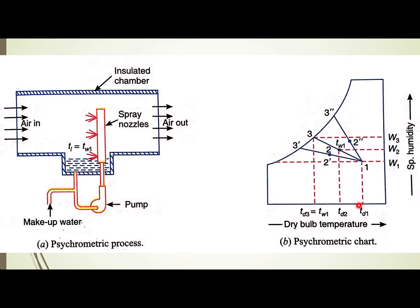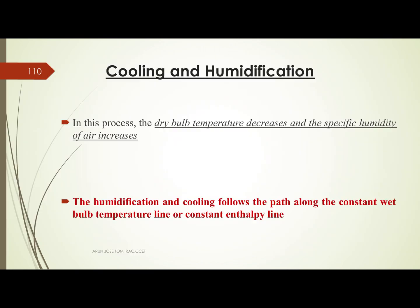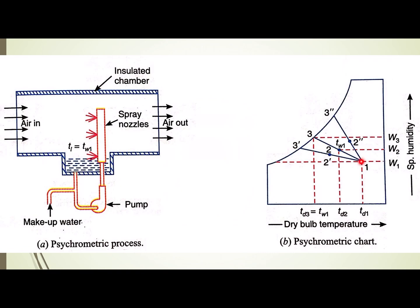In this process, the temperature decreases and the specific humidity increases. The humidification and cooling follows the path along the constant wet bulb temperature line or constant enthalpy line. That is why the 1-2 process is a constant enthalpy process.